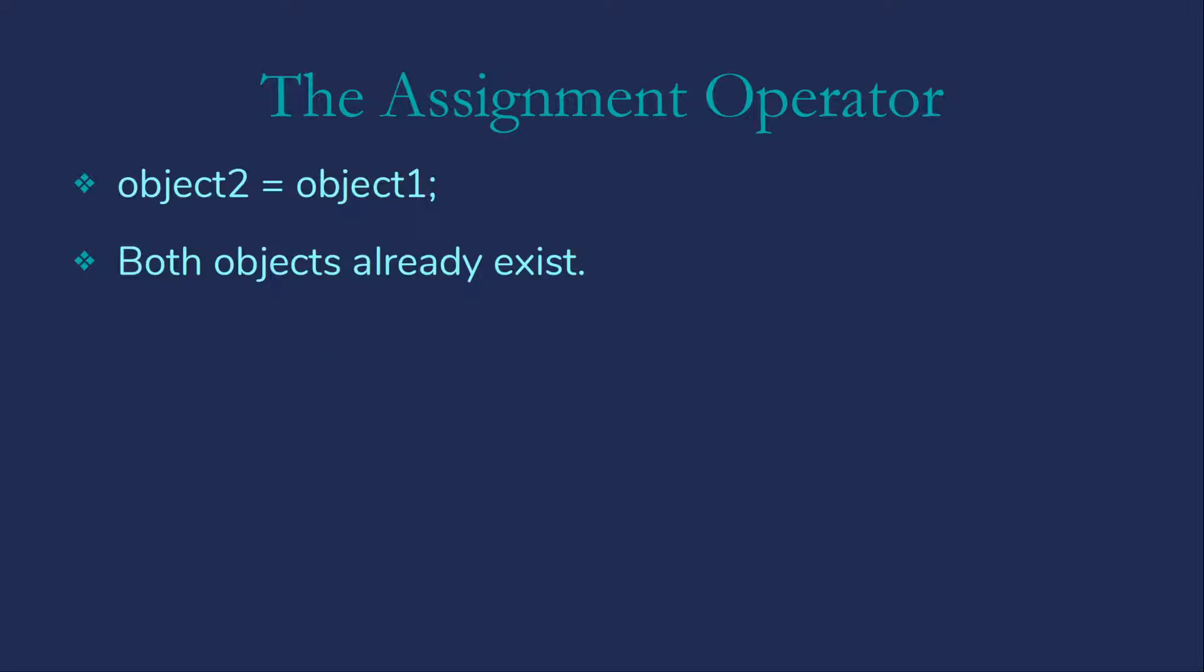Our third needed method is the assignment operator. This is what we'll use if we assign one object to another object. In this case, both objects already exist.